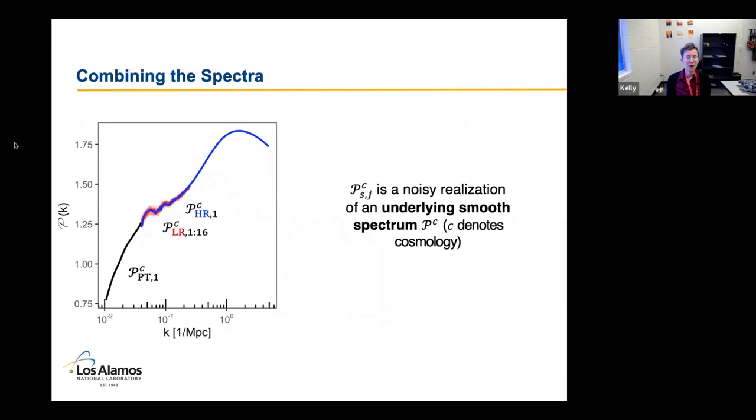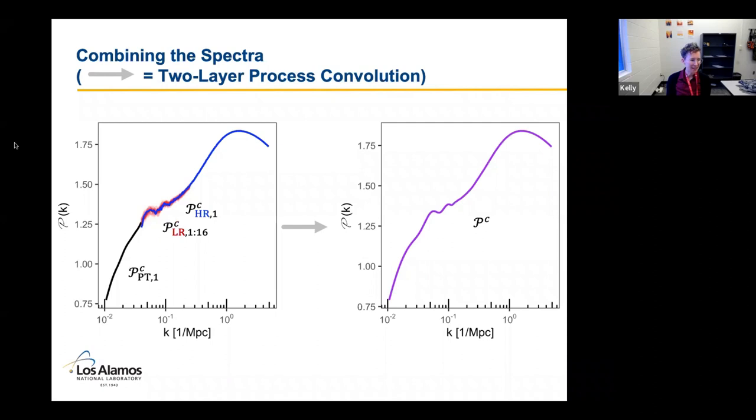And then the low resolution simulations are only valid for k up to about 0.25. So this clutter zone in the middle between about 0.04 and 0.25 is where we're using low res and high res. And then up at higher k, we're just using high resolution simulation results. Okay, so as I mentioned, we have these noisy realizations of what we believe is an underlying smooth spectrum. So here, this notation is just to show that we see these different realizations, which I'm subscripting by their type. So LR for low res, HR for high res, PT for perturbation theory. But what these are, are realizations of an underlying smooth spectrum, which I'm denoting here by script P of C.